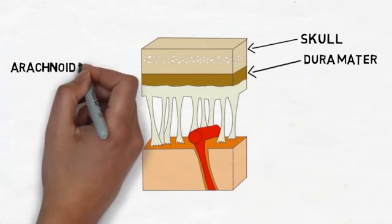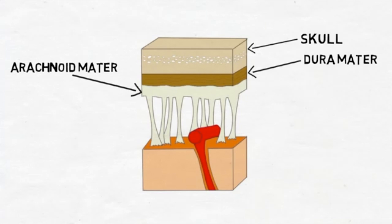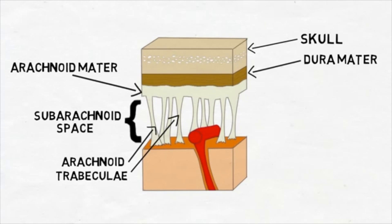The dura is followed by the arachnoid mater, a delicate, impermeable membrane. Last is the pia mater, which is a vascular membrane that closely invests the brain.